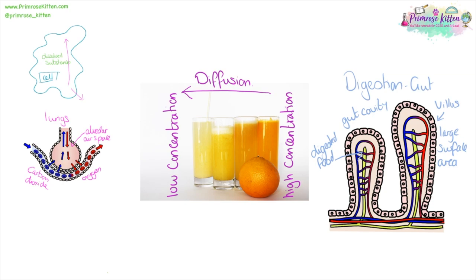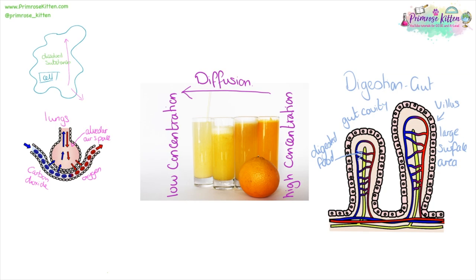Or this can be in the gut. These are the villi of the gut. This is the gut cavity here. And you'll notice again they are one cell thick, and just like the alveoli, they have a very large surface area. We're going to get digested food moving from the gut cavity into the blood so that it can be taken around the rest of the body. So diffusion is the movement of gases or any particles that are dissolved in solution, moving down a concentration gradient from a high concentration to an area of low concentration.